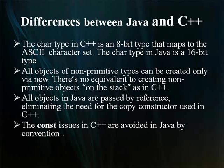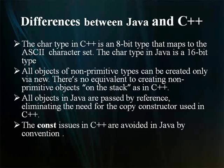The constant issues in C++ are avoided in Java by conversion. You pass only handles to objects and local copies are never made for you automatically.